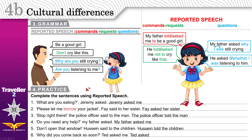Now, practice. Complete the sentences using reported speech. What are you eating? This is a question with a question word: 'what.' Jeremy asked me — use the question word 'what' — 'are you?' becomes 'I was.' What I was eating.